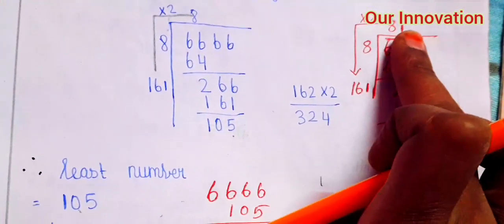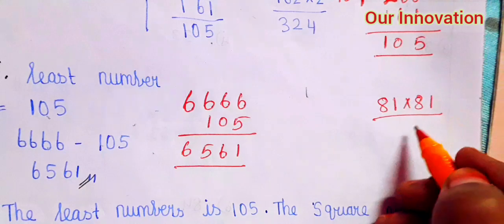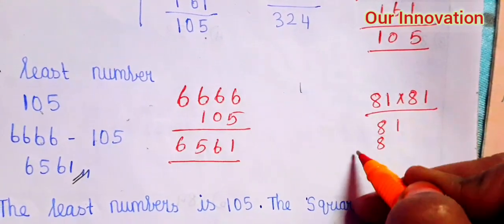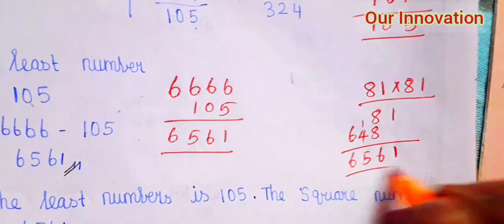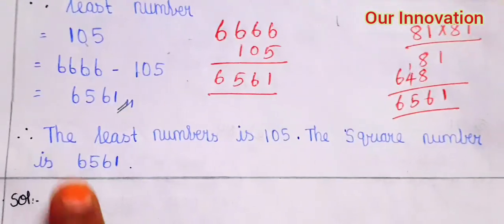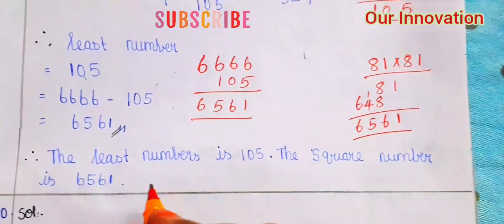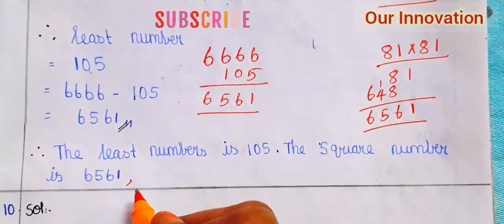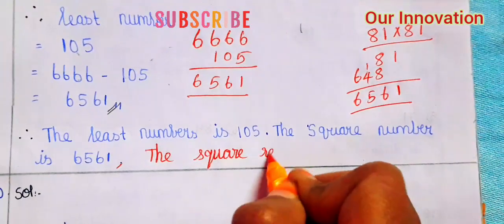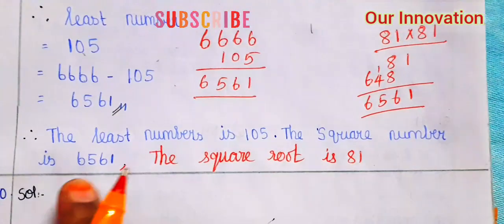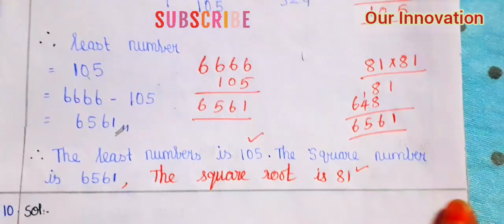6666 minus 105 equals 6561. Next, find the square root. Square root of 6561 is 81. So multiply: 81 into 81. 8 times 8 is 64, 8 plus 8 is 16, balance 1 — so 6561. Therefore the least number is 105 and the perfect square is 6561. The square root is 81.